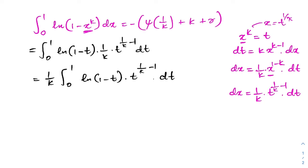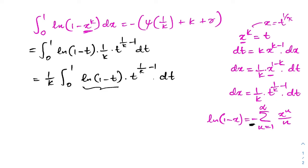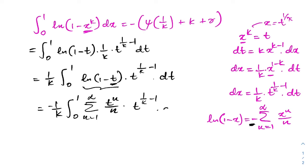Here we have natural log of (1 minus t), so we can use the series representation. The series representation of natural log of (1 minus x) is equal to minus the infinite sum from n equals 1 to infinity of x^n over n. So substituting t for x, we write the series with t^n over n.